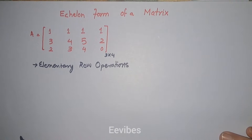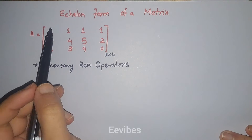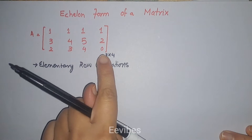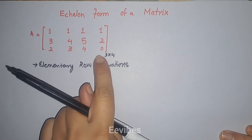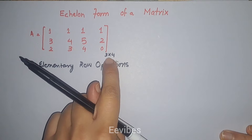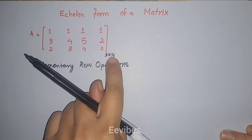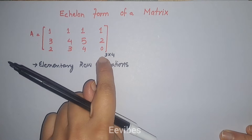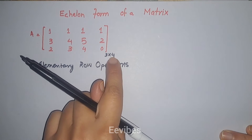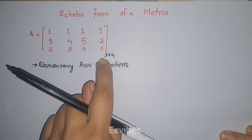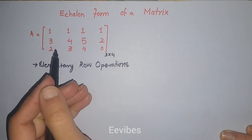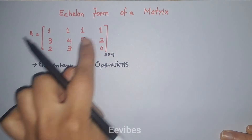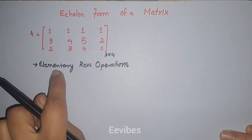Assalamu alaikum, I am Asma Mujtak. In this tutorial I am going to find the echelon form of a matrix A. We can see this matrix is a rectangular matrix because the order of the matrix is three cross four, so it's not a square matrix. In a square matrix the number of rows and columns are equal, while in a rectangular matrix the number of rows and columns are not equal.